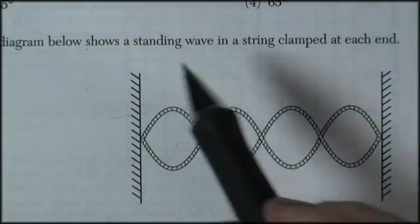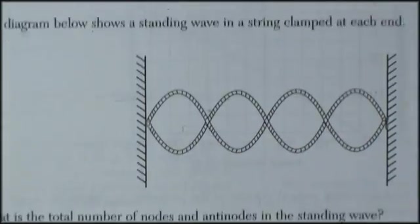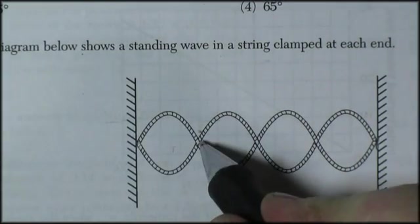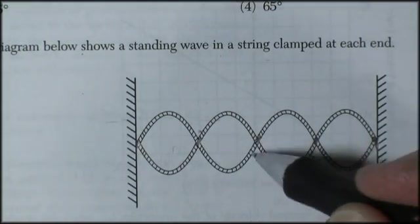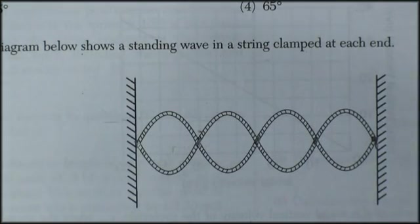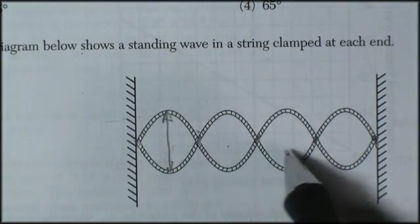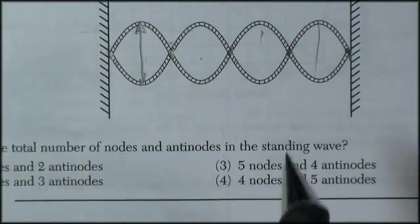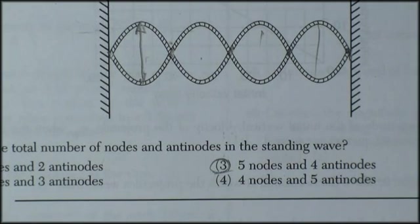And finally, question 50. The diagram below shows a standing wave in a string clamped on each end. The total number of nodes and anti-nodes in the standing wave. Well, the nodes are these points of no movement. When you did this lab, this is where your hand would have been, and these were the places that weren't moving. So I've got 1, 2, 3, 4, and 5 nodes. And the places of maximum deflection are the anti-nodes. So I've got 1, 2, 3, 4 anti-nodes. So 5 nodes and 4 anti-nodes. And here we are, option 3, 5 nodes, 4 anti-nodes. And pages 10 and 11 are now done.